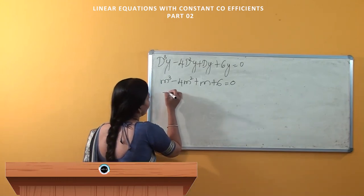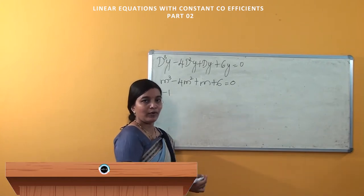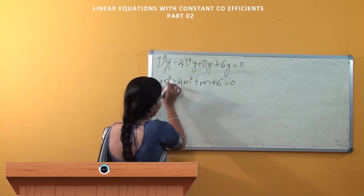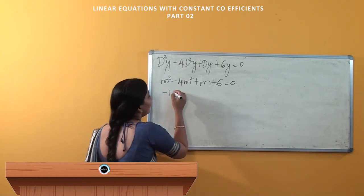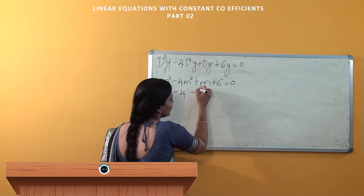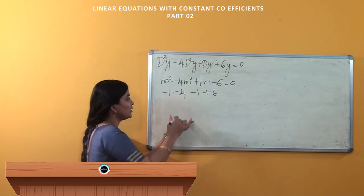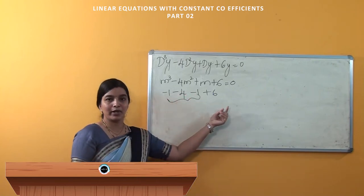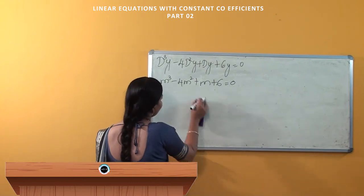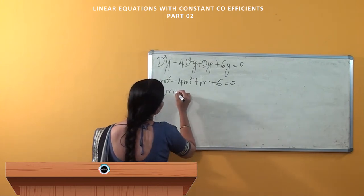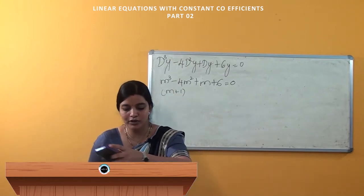We will see what if it is minus 1 — whether we will get the value equal to 0. If I take minus 1: (−1)³ − 4(−1)² + (−1) + 6. You can observe here this is 6 − 6 + 6, which clearly gives 0. So one root is m = −1, meaning (m + 1) is one of the factors of the given auxiliary equation.